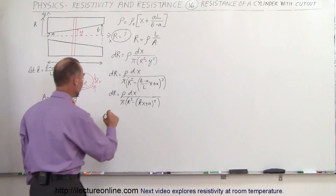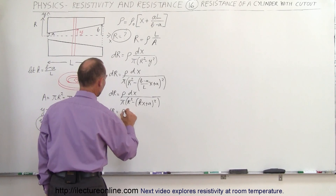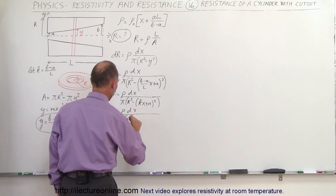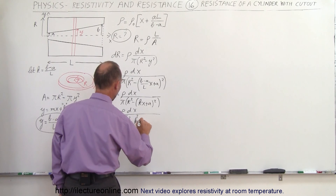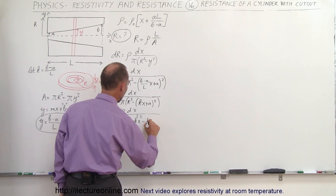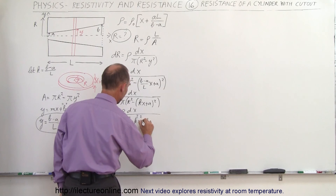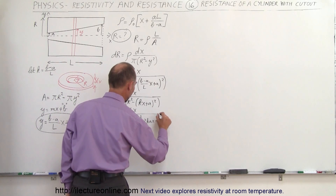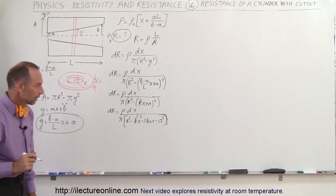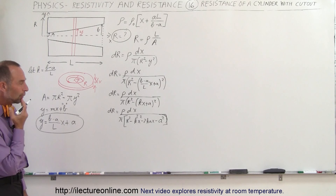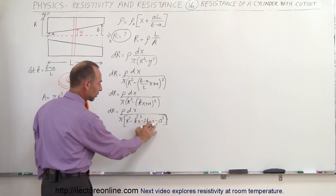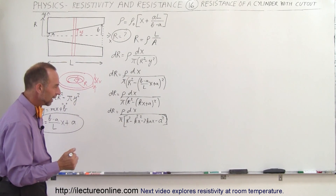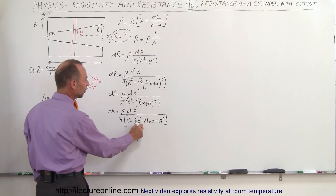Multiplying out the squared term, DR equals the resistivity times DX divided by pi times [R squared minus K squared X squared minus 2KA times X minus A squared]. Looking at the denominator, we have an X squared term, an X to the first term, and a constant. To simplify, we want to factor out a negative K squared and eliminate it to get X squared by itself.